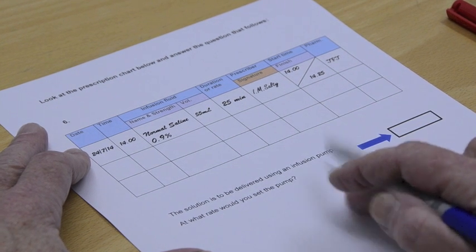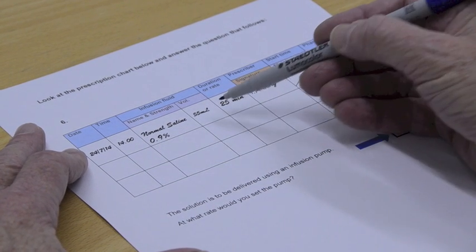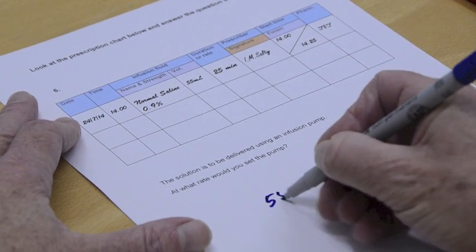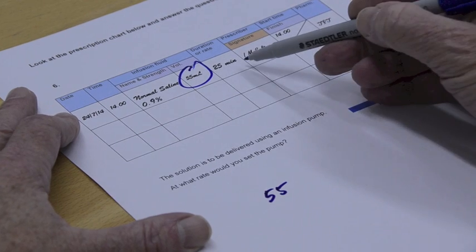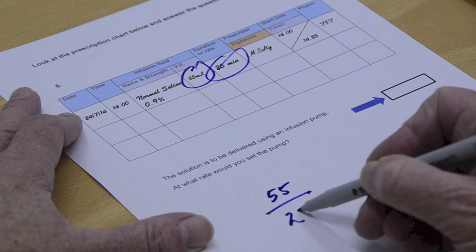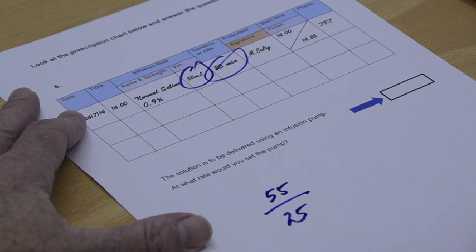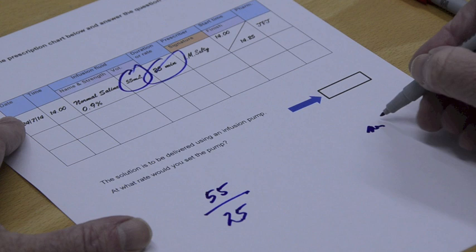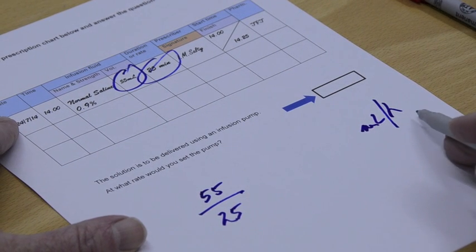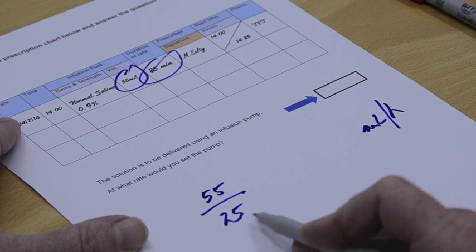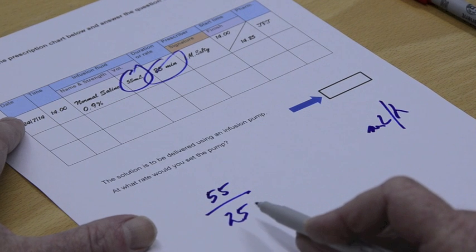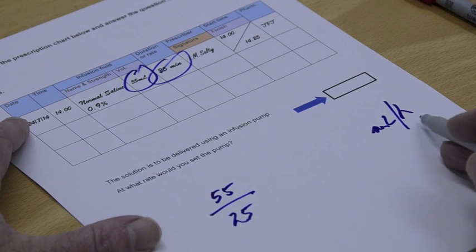So okay, so far. We set it out in the usual way. We've got 55 mils, that's it, to be given over 25 minutes, fairly short time and less than an hour obviously. But you remember that our machine, not very bright, it can only deliver in mils per hour and we've already put minutes down here, so already we've altered the calculation. We've got to remember to convert this back into hours.